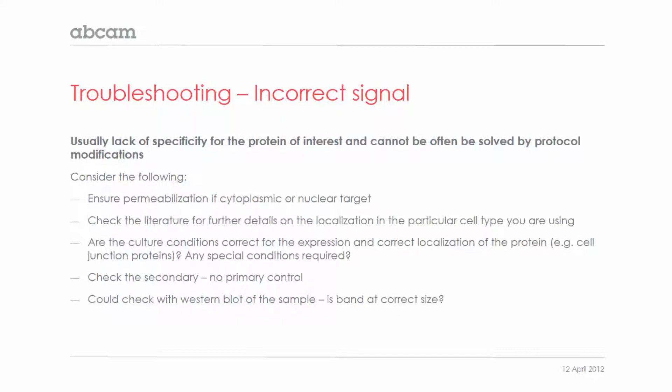Check the secondary antibody with a no-primary control to make sure it's not binding nonspecifically. If you want to take it a step further, you could check your sample with a western blot and confirm that the band observed is at the correct size for your protein.